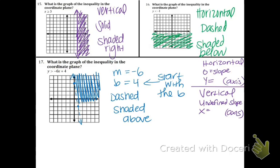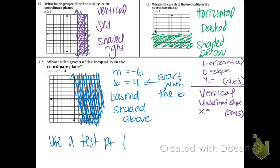And if you ever forget exactly where to shade, if you're totally confused, use a test point. The easiest test point is 0, 0. So if you plug 0, 0 in for the inequality and it works, then you'll shade on the side where the origin — 0, 0 — is. Whereas if you plug 0, 0 in and it doesn't work, then obviously you're not shading on that side.